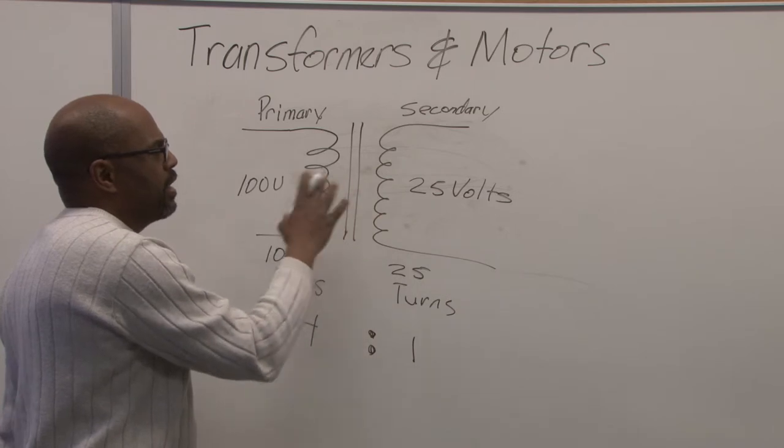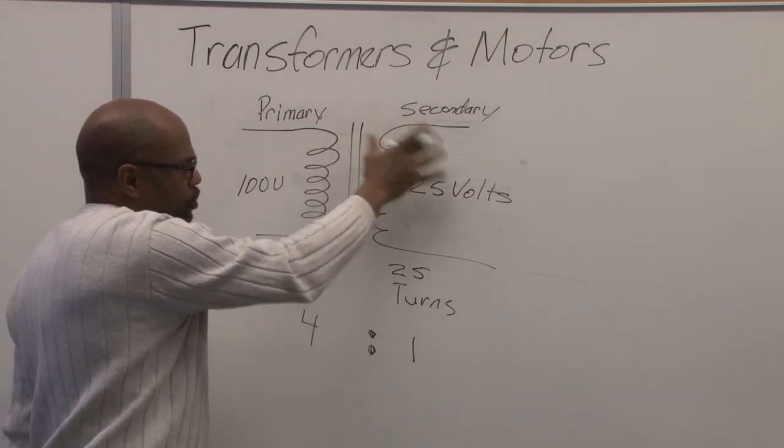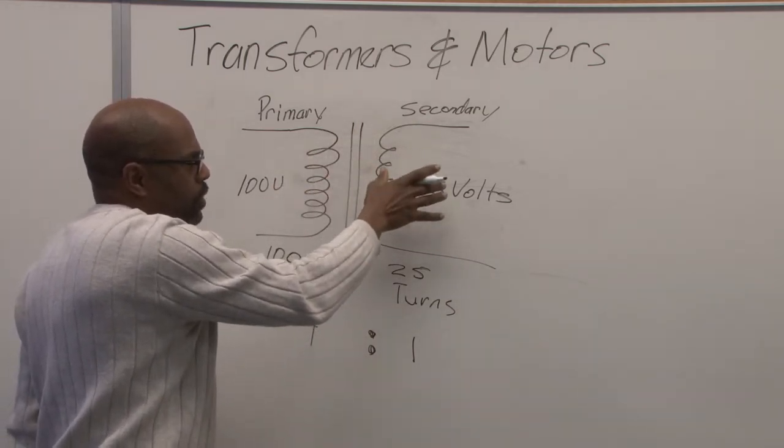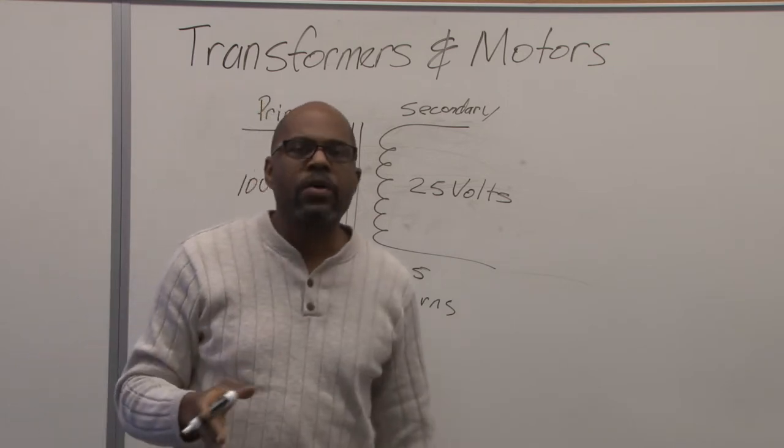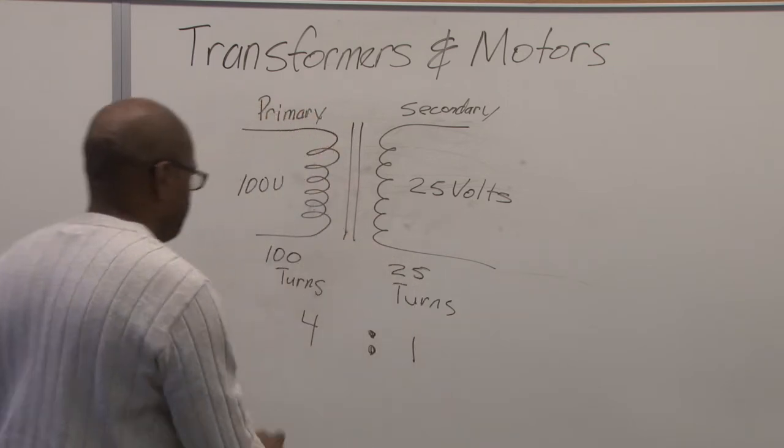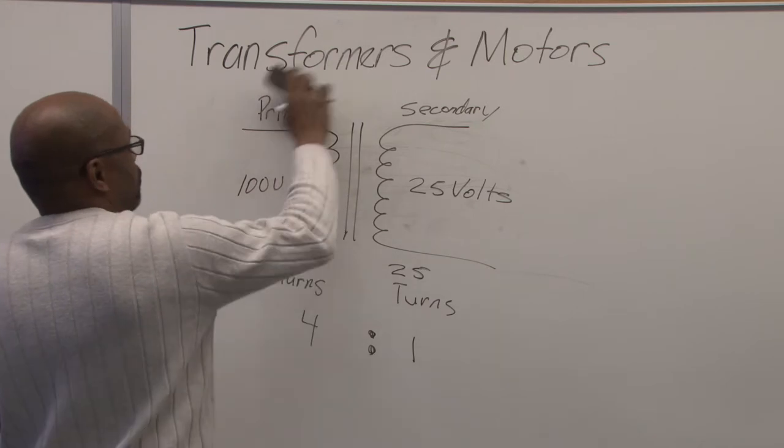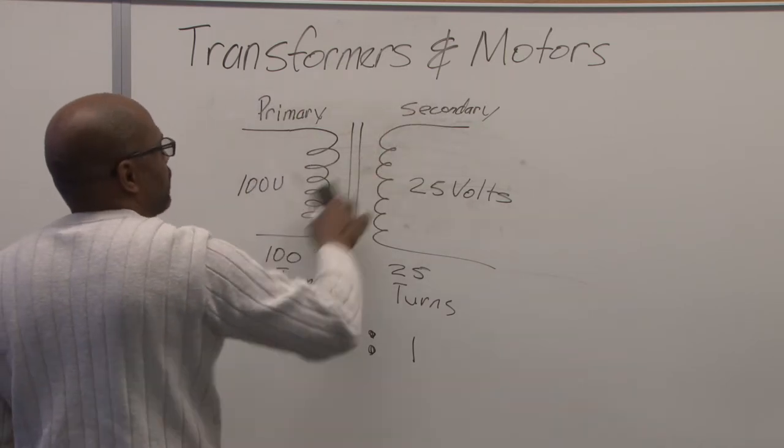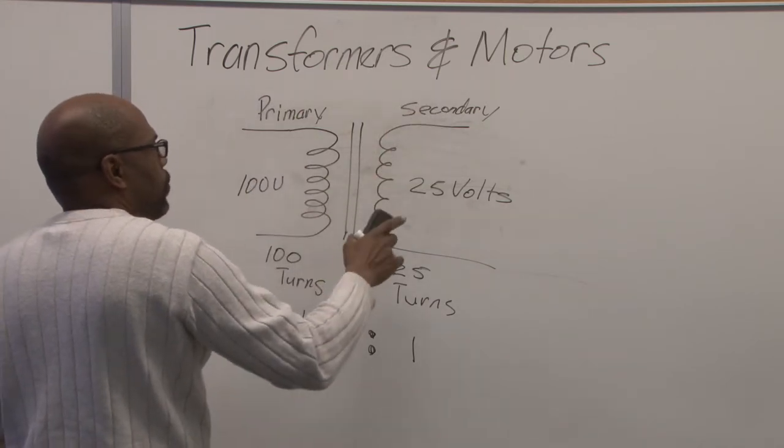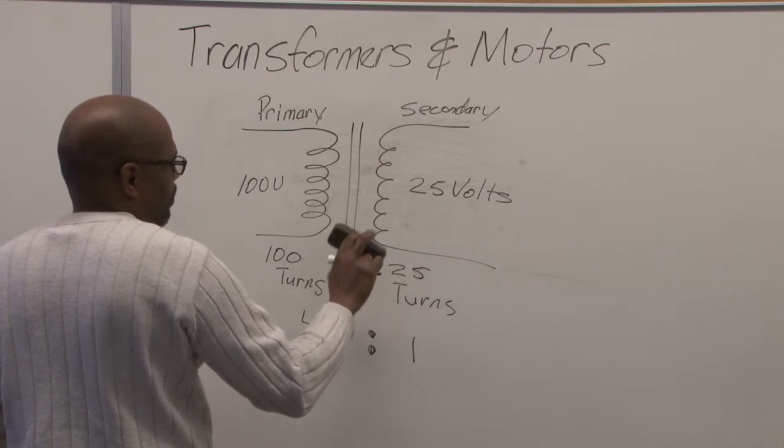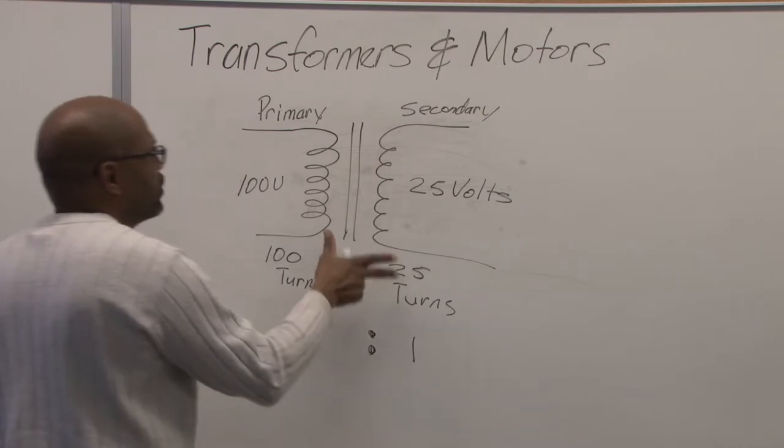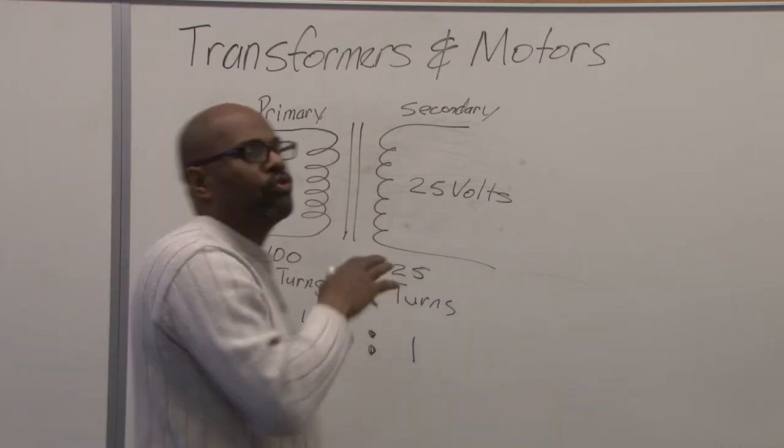And this is a basic magnetic field being introduced into one side to another side, which we call induction. So this is basically a transformer and how magnetic field is going to be created to cause voltage to be changed. Of course, this is what we call a step-down transformer.